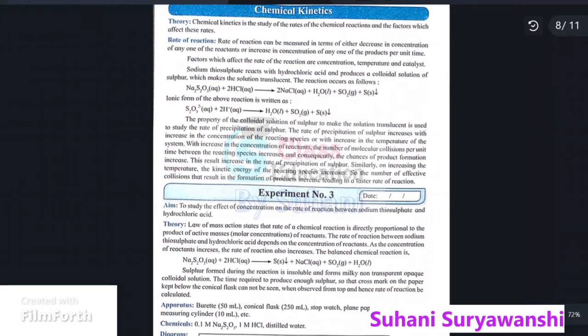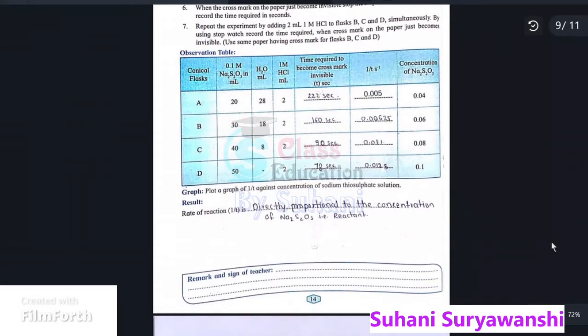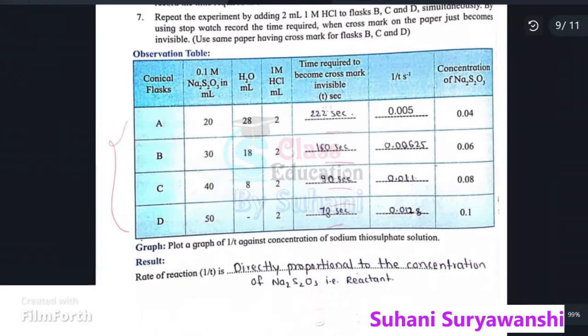So the name is chemical kinematics and the experiment starts from here. Here is the observation table and these are the observations. I hope the numbers are quite visible.